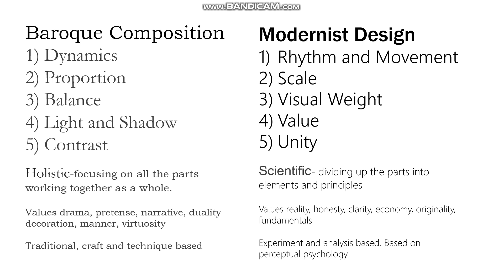They thought about many of the same things — dynamics is not really that different from rhythm and movement — but they are very different ways of thinking about the same thing. They thought about proportion; modernists tend to think about scale. A modernist might think about value; Baroque artists would have referred to it as light and shadow. Modernists place a high value on unity, whereas in the Baroque they primarily thought about contrast as a way of creating unity, even though they didn't use the word unity that much.